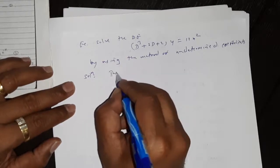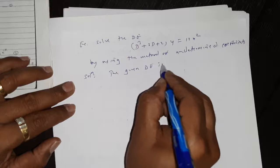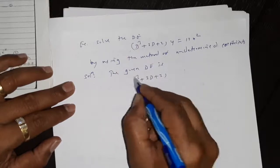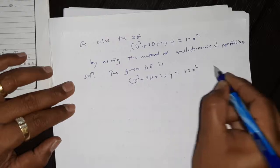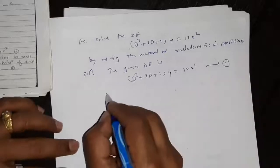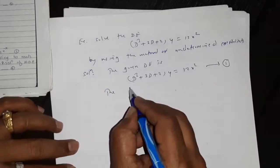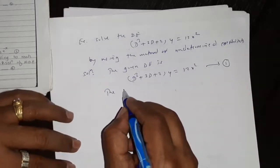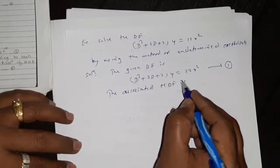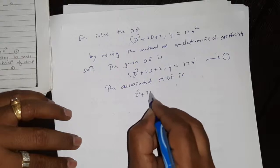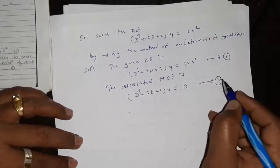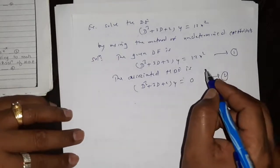The given differential equation is D² + 3D + 2y equal to 12x², a non-homogeneous differential equation with constant coefficients. The first part: we find the complementary function. The associated homogeneous differential equation is D² + 3D + 2y equal to 0.